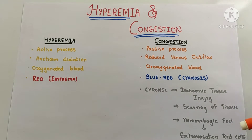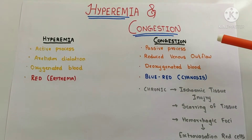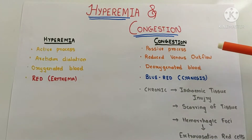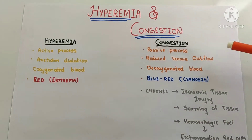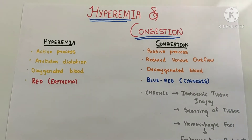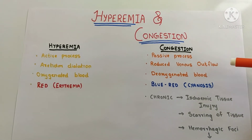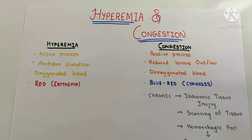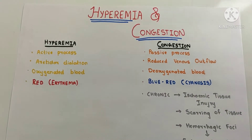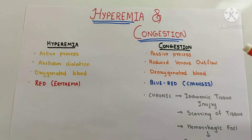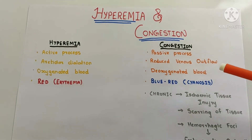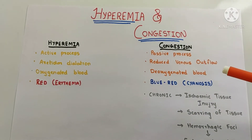Congestion is a passive process which occurs due to reduced venous outflow, which can be localized or generalized. An example of localized reduced venous outflow is obstruction of a particular vein due to an external mass or pressure. Whereas generalized congestion occurs when there is cardiac failure, and the venous outflow will be reduced everywhere.